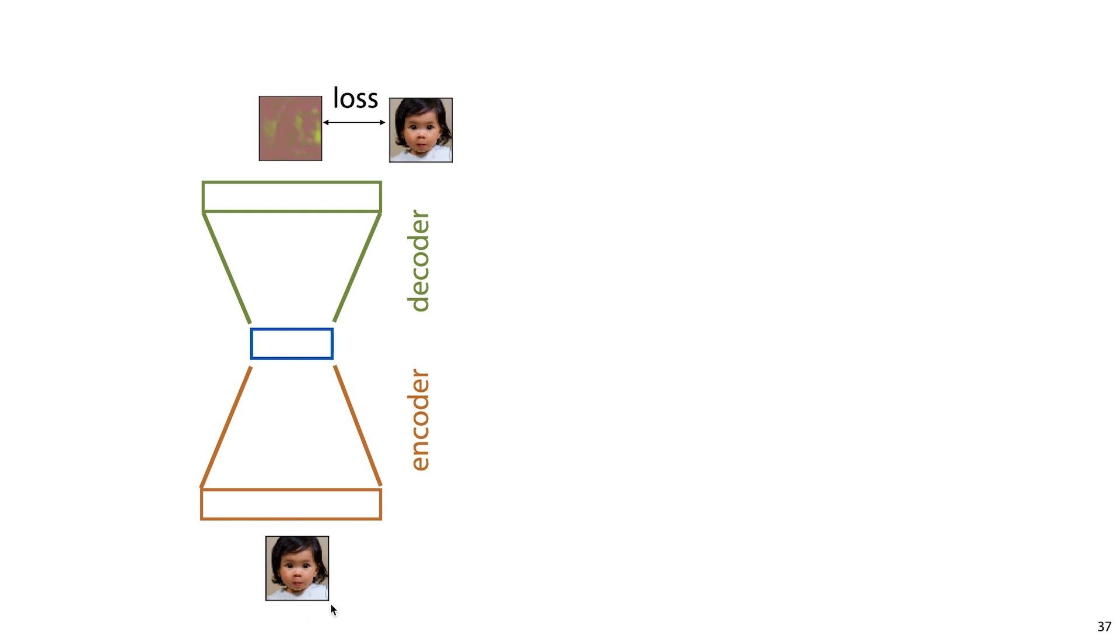We haven't talked yet about how to feed a neural network an image, but for now we can just flatten the whole thing into a vector. Every color channel of every pixel becomes an input node, giving us in this case 128 times 128 times 3 inputs. That's a bit costly, but we'll see some more efficient ways to feed images to neural networks soon. Many loss functions would work here, but to keep things simple, we can stick with the squared error loss.